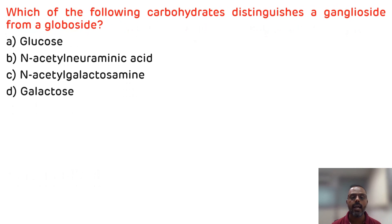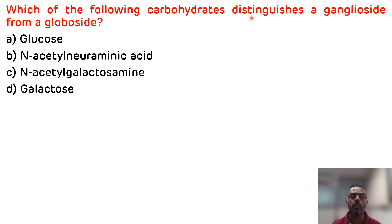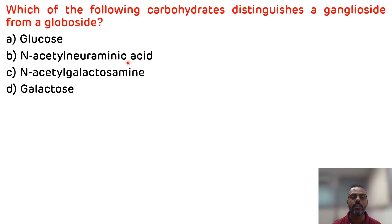Third question: which carbohydrate distinguishes ganglioside from globoside? Options: globose, NANA, N-acetylgalactosamine, or galactose. The carbohydrate that distinguishes ganglioside from globoside is sialic acid, also known as N-acetylneuraminic acid. The correct answer is B. That is all about glycolipids. Thank you for watching.